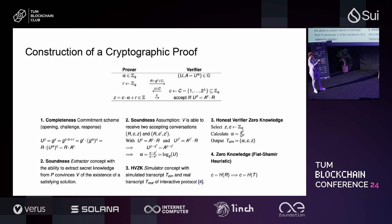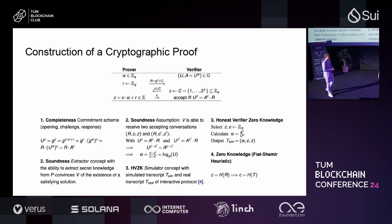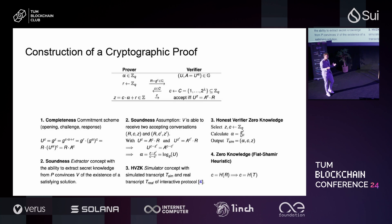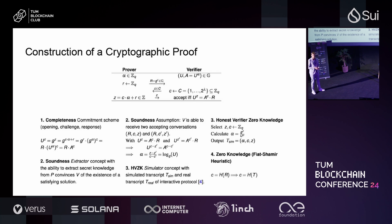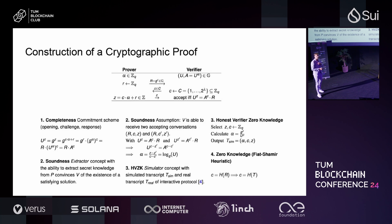By sharing parameter A, the verifier cannot actually find what alpha is. We want to run this proof protocol so the verifier is convinced the prover knows alpha, but the verifier should not learn this parameter. To ensure the whole paradigm operates correctly, a proof system must demonstrate three properties: completeness, soundness, and zero knowledge.